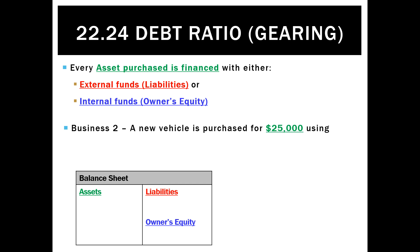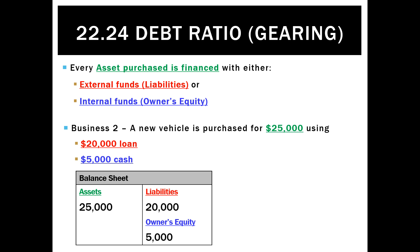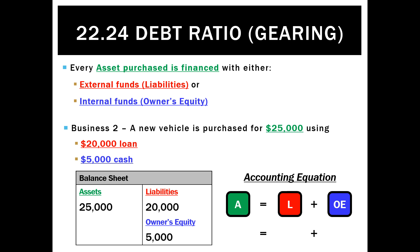Compare that to business two, who's bought the same model car for $25,000, but they've borrowed $20,000 and only used $5,000 of their own money. So their balance sheet would show assets are still $25,000, but liabilities are $20,000 and owner's equity is $5,000, which flows through to their accounting equation.